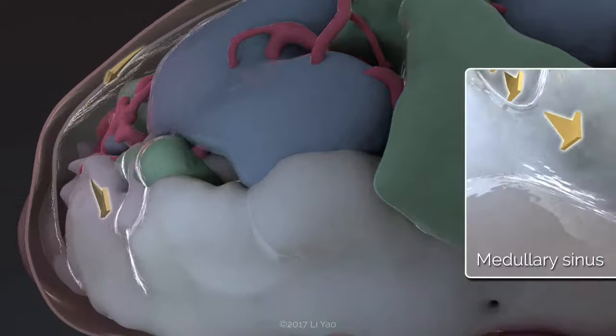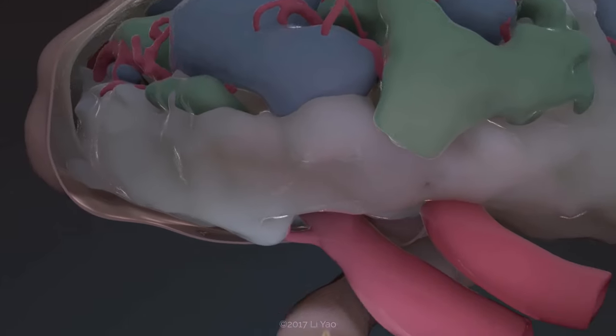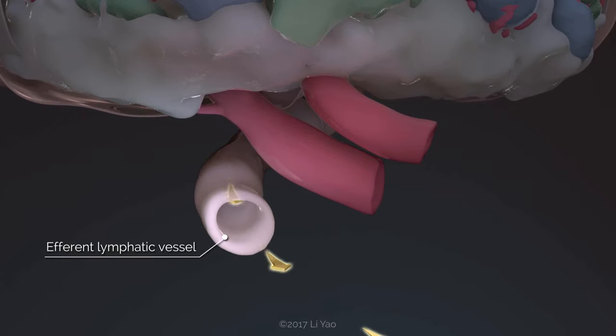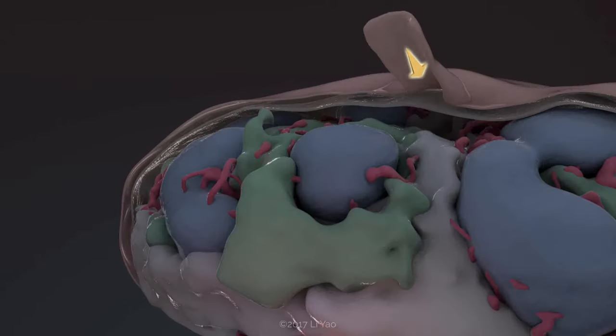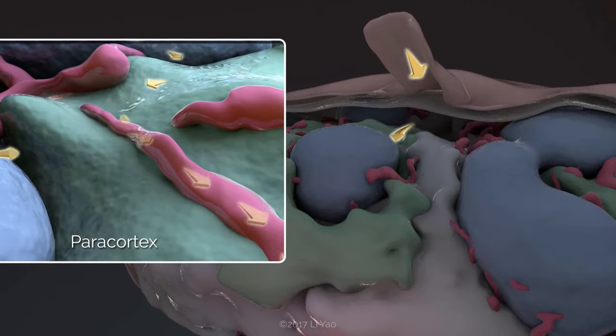Most lymph drains into medullary sinuses and leaves the lymph node via the efferent lymphatic vessel. A small amount of lymph perfuses into the paracortex and is absorbed by blood vessels.